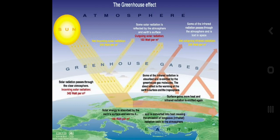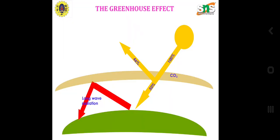The surface gains more heat and infrared radiation is emitted again. Some of the infrared radiation is absorbed and re-emitted by the greenhouse molecules. The direct effect is the warming of the earth's surface and atmosphere. Some infrared radiation passes through the atmosphere and is lost in space. Solar radiation falls on the earth's surface and 45 percent is reflected, but due to CO2 the remaining percentage stays inside the atmosphere only.